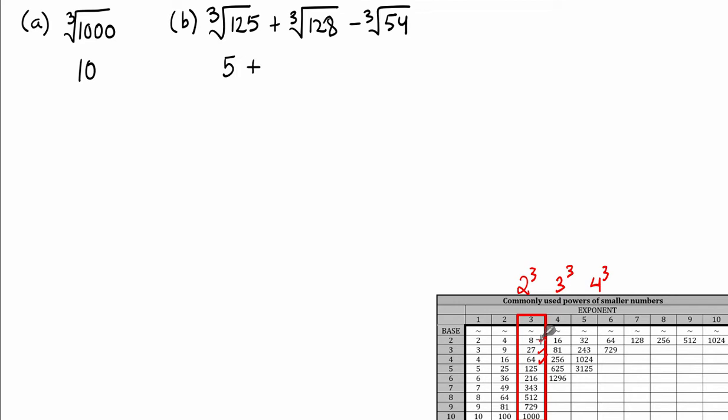You look at the perfect cubes which are smaller than 128, such as 125, 64, 27, 8. And you look for a perfect cubic number, in this case 64, which might divide evenly into 128. 64 goes into 128 twice. That means you can rewrite cube root 128 as cube root of 64 times 2.